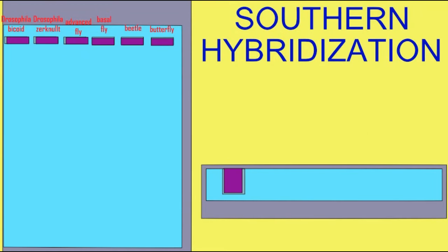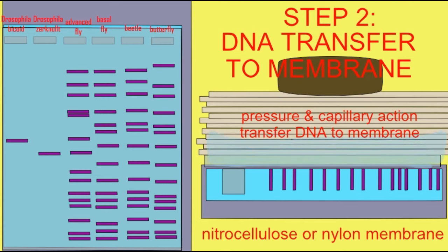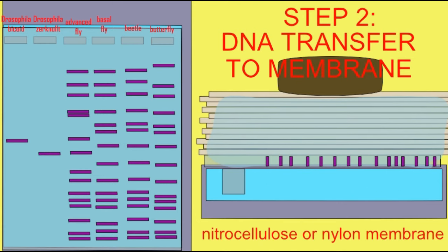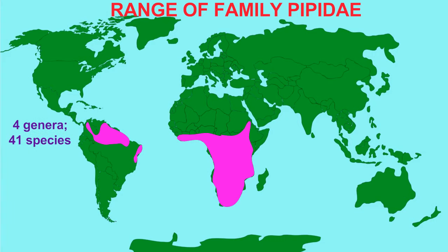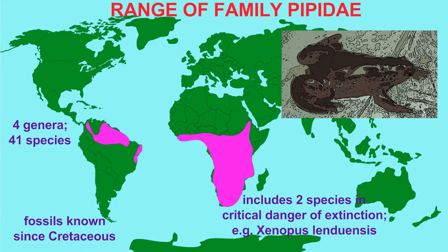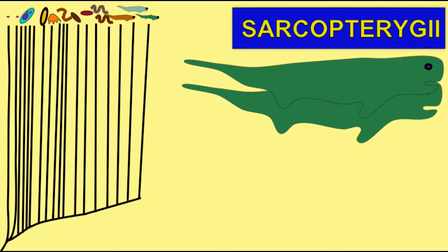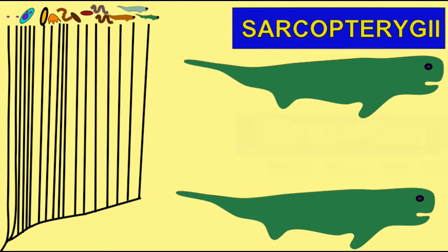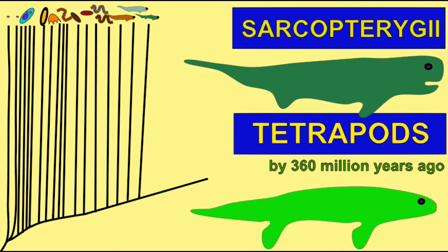An advantage to studying a gene or its protein in one organism is that probes can then be made, which allow you to ask the question: is this gene present in other organisms? This question was asked of the toad Xenopus, which is a common research organism. Does it possess and express a homologue to the Drosophila gene bicoid? The answer was found to be yes, and the vertebrate version of this gene was named goosecoid. It was discovered in the Xenopus toad, but then subsequently found in fish and in humans.